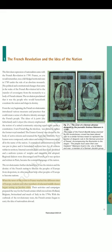A new French flag, the tricolour, was chosen to replace the former royal standard. The Estates General was elected by the body of active citizens and renamed the National Assembly. New hymns were composed, oaths taken and martyrs commemorated, all in the name of the nation. A centralized administrative system was put in place and it formulated uniform laws for all citizens within its territory. Internal customs duties and dues were abolished and a uniform system of weights and measures was adopted. Regional dialects were discouraged and French, as it was spoken and written in Paris, became the common language of the nation. The revolutionaries further declared that it was the mission and destiny of the French nation to liberate the peoples of Europe from despotism — in other words, to help other peoples of Europe to become nations. When the news of the events in France reached the different cities of Europe, students and other members of educated middle classes began setting up Jacobin clubs.